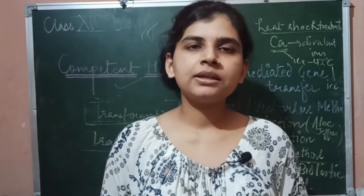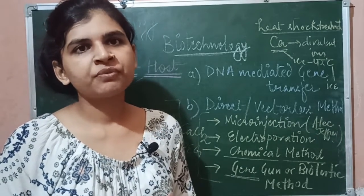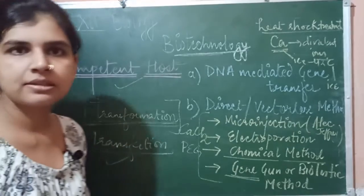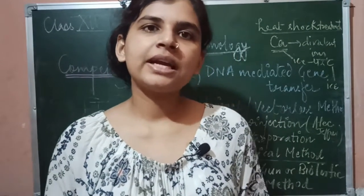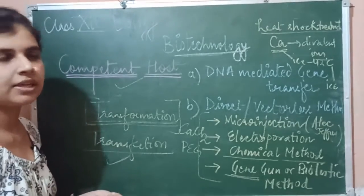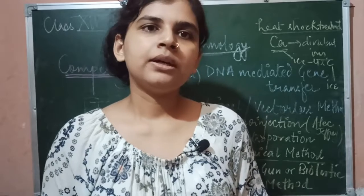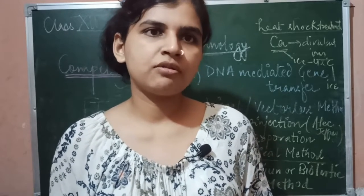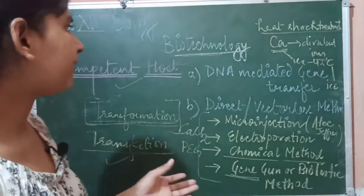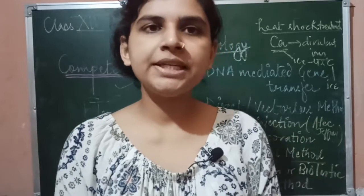This completes our discussion of the tools of recombinant DNA technology. We started with what biotechnology is, then covered its processes — genetic engineering and chemical engineering — then the tools: cloning enzymes, lysing enzymes, cloning vectors, and now competent hosts. In the next video we will start the procedure of biotechnology — how we actually make recombinant DNA. If you have any doubts, please ask, and thanks for watching. If you liked it, please subscribe!